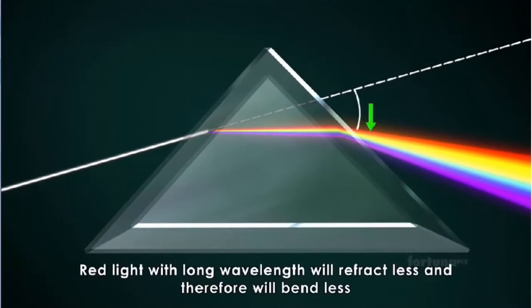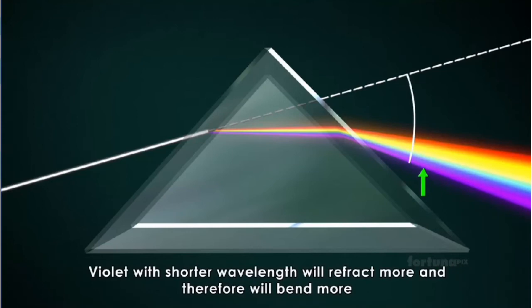Red light with long wavelength will refract less and therefore will bend less. Violet with shorter wavelength will refract more and therefore will bend more.